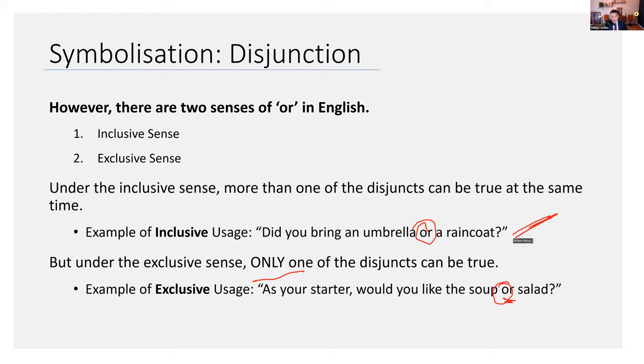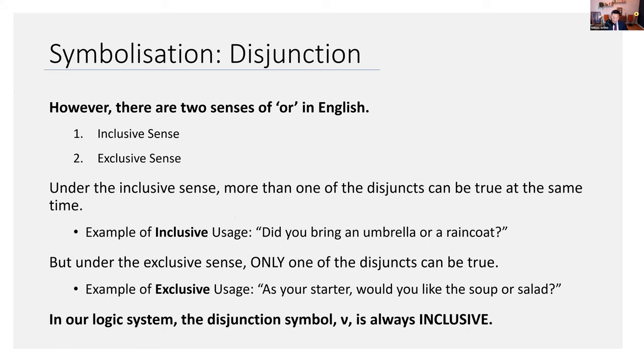As your starter, would you like a soup or a salad? In English, when we use or, sometimes we mean inclusive, sometimes we mean exclusive. It depends on the situation. Maybe some of you can think of cases where the inclusive usage is a bit more clear or where everyone agrees that it's inclusive. But I think the restaurant one is a good example of the exclusive sense because restaurants rarely let you pick two. In our logical system, the disjunctive symbol is always going to mean inclusive.